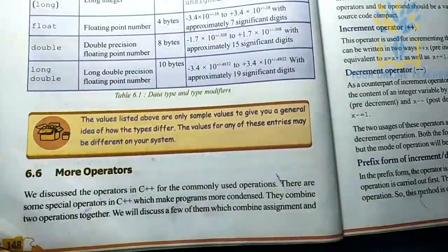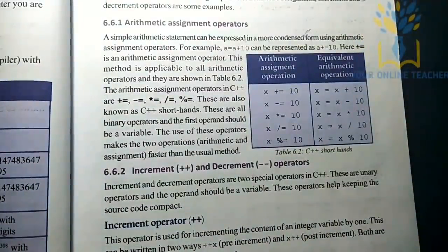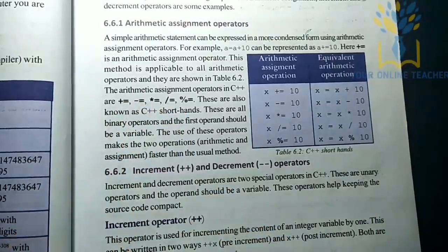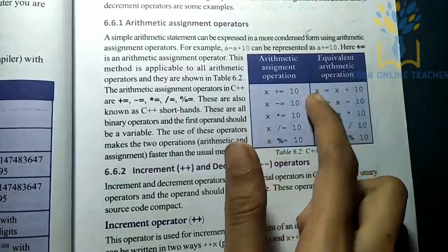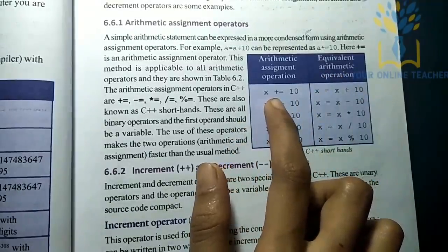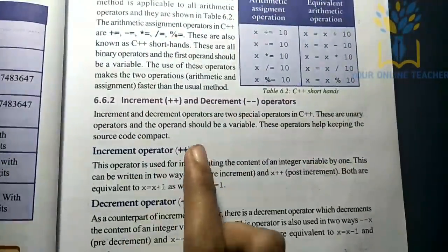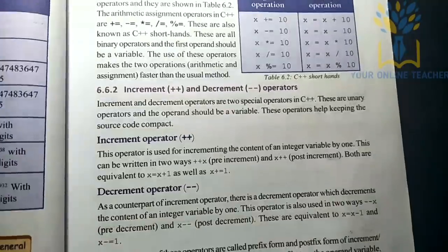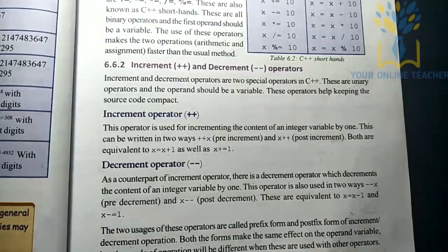We are going to look at operators. There are different types of operators. The arithmetic assignment operator, the increment operator — called a++ or x++ — and the decrement operator, called a-- or x--.